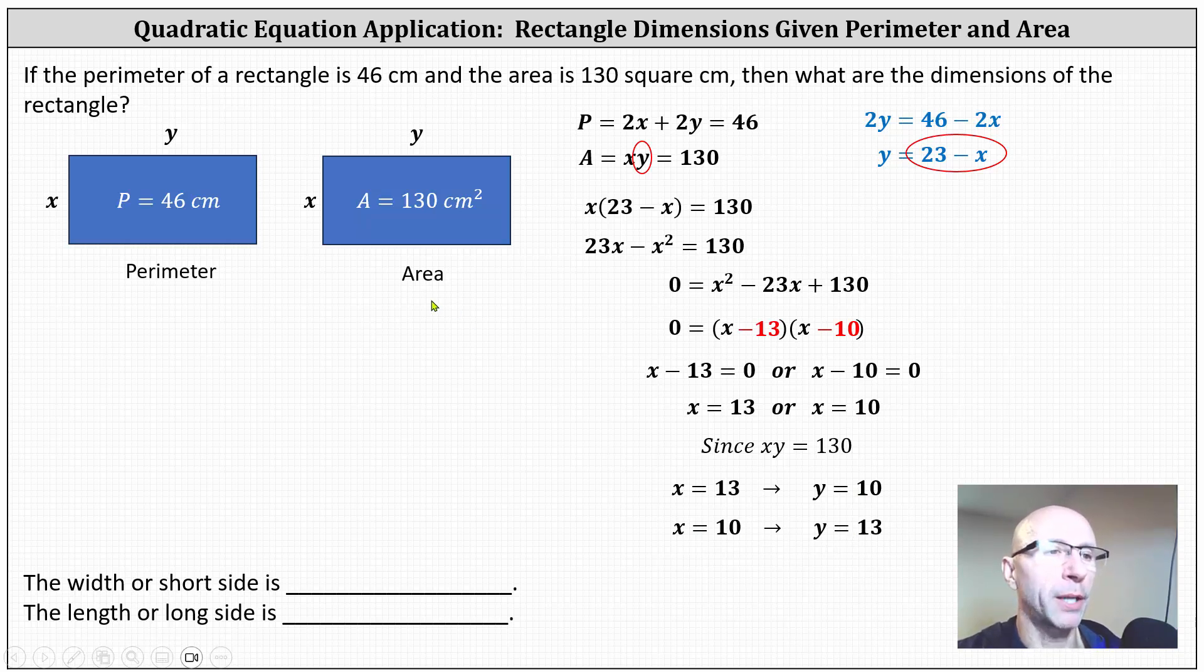Notice either way, the rectangle has the same dimensions. It's a 13 centimeter by 10 centimeter rectangle. Looking at how we're supposed to give the answer, we're asked to give the width or short side, which would have a length of 10 centimeters, and the length or longer side would have a length of 13 centimeters. I hope you found this helpful.